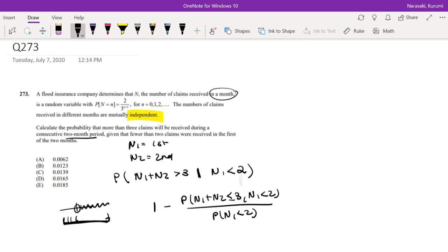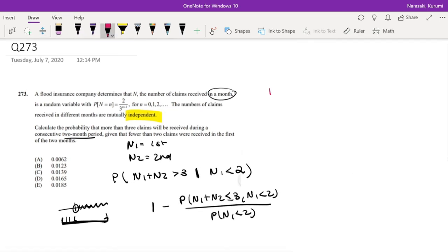Because again, the formula for conditional probability is A and B is equal to, or A given B is equal to probability of A and B over probability of B.